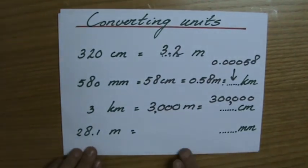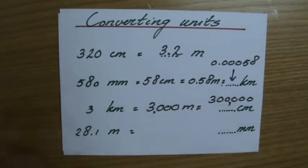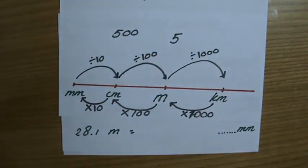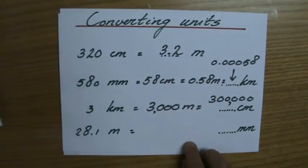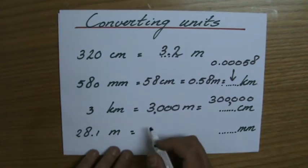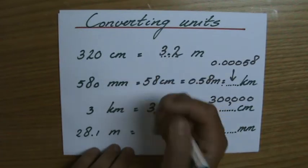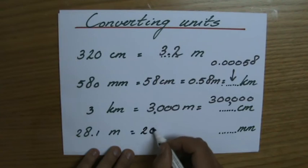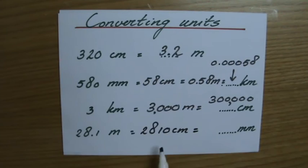Last example: 28.1 meters — how many millimeters? Step by step, picture the line: meters → centimeters → millimeters. First go to centimeters: 28.1 meters times 100 equals 2810 centimeters. That's roughly from here to the garden — a lot of small centimeters.